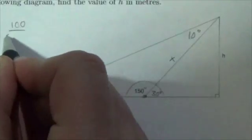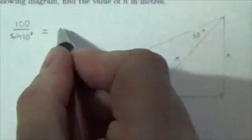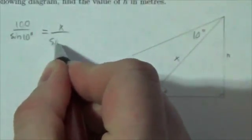So I know this - I know that 100 over the sine of 10 degrees is going to equal x over the sine of 20.